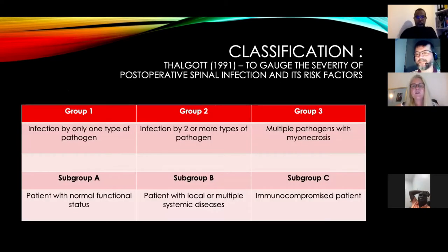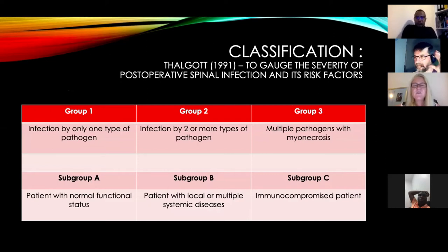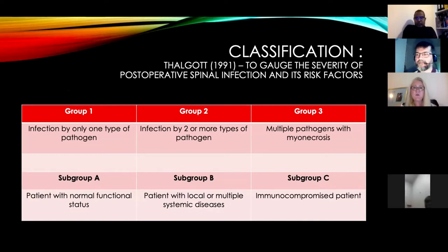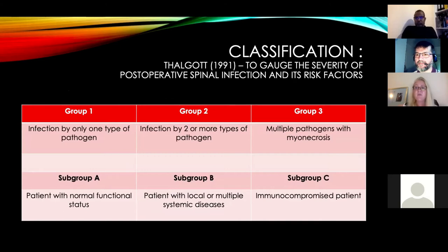This is a classification system described by Felgot in 1991, aimed at gauging post-operative spine infections. It is split into Group 1, Group 2, and Group 3 depending on the pathogens, and then into subgroups dependent on the type of patient.